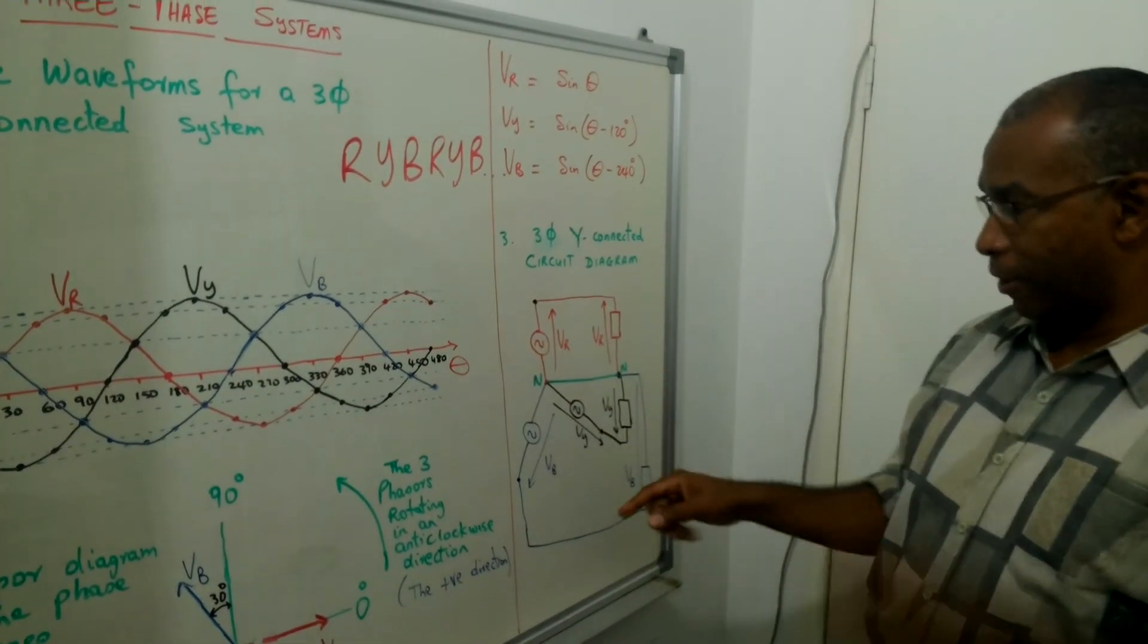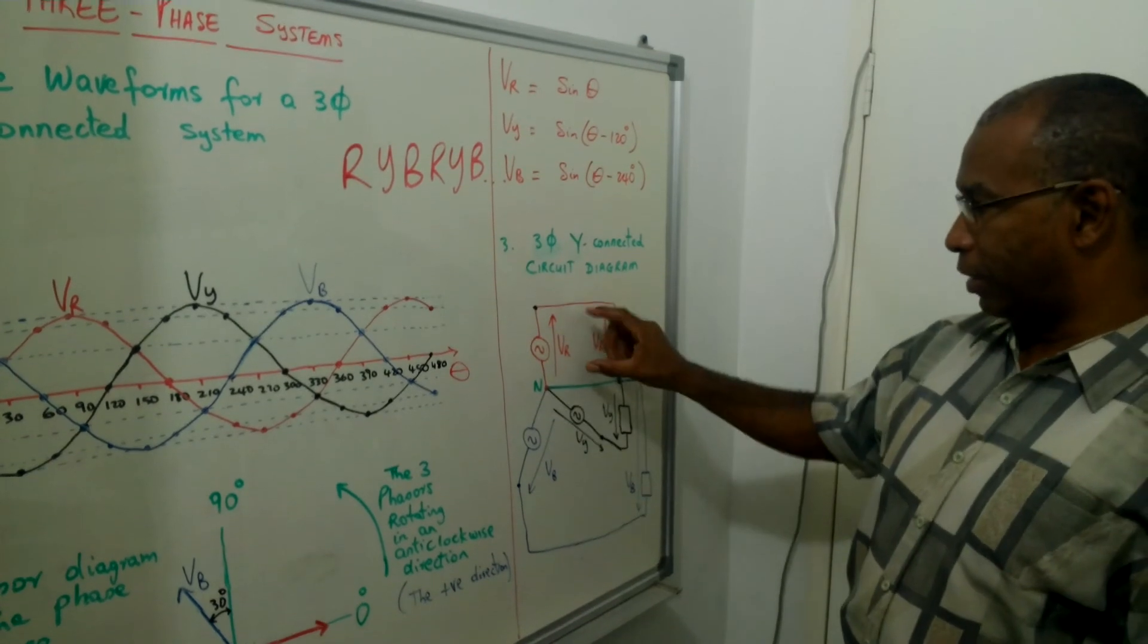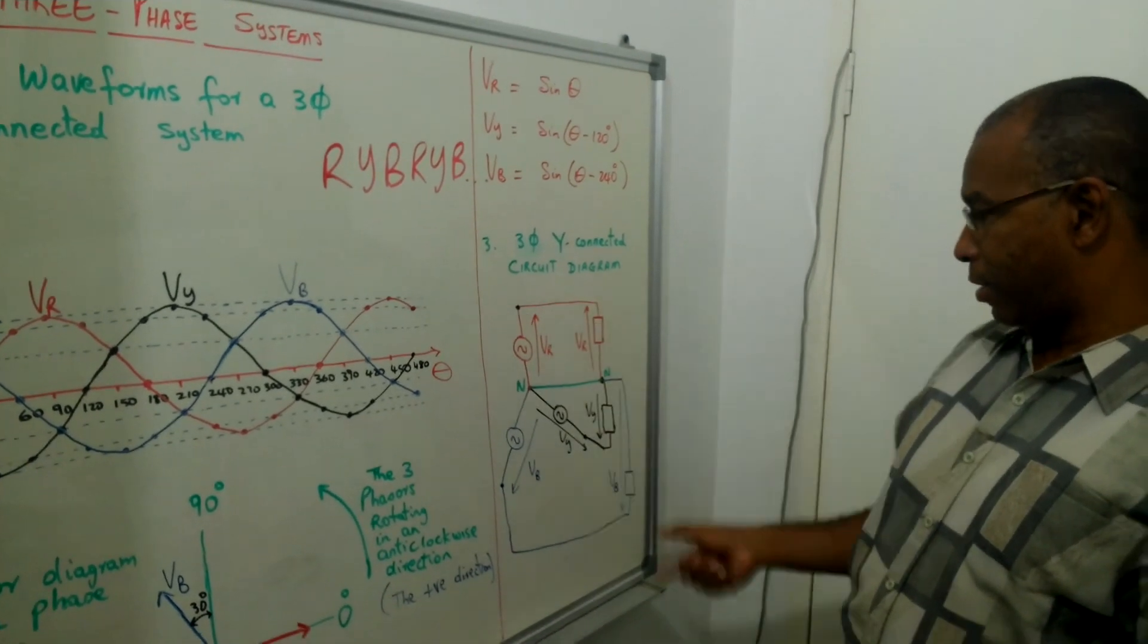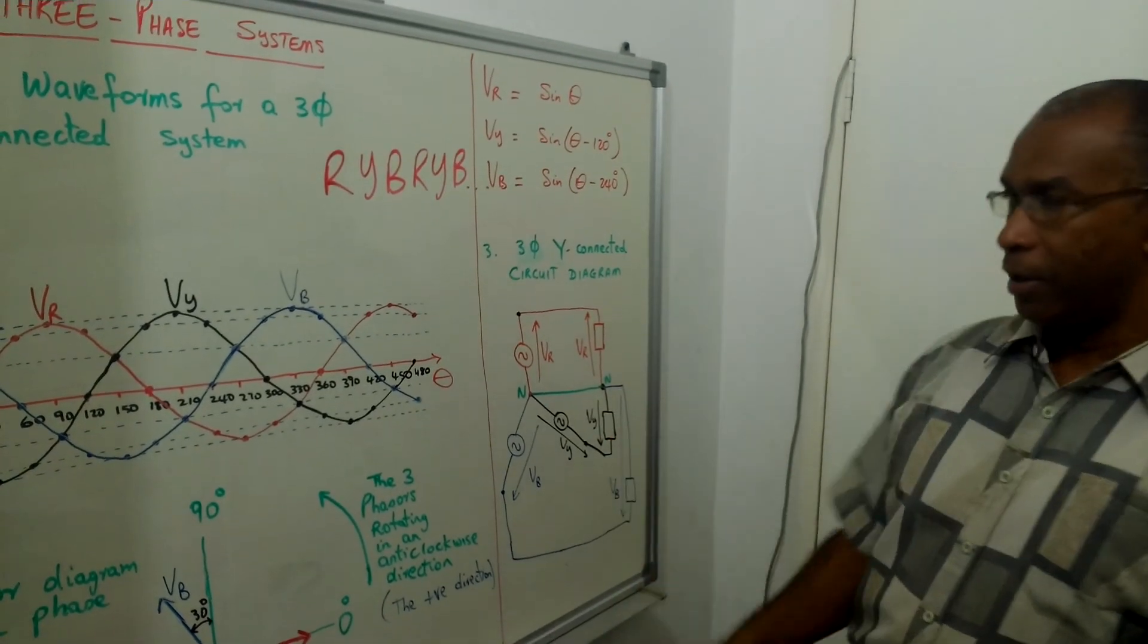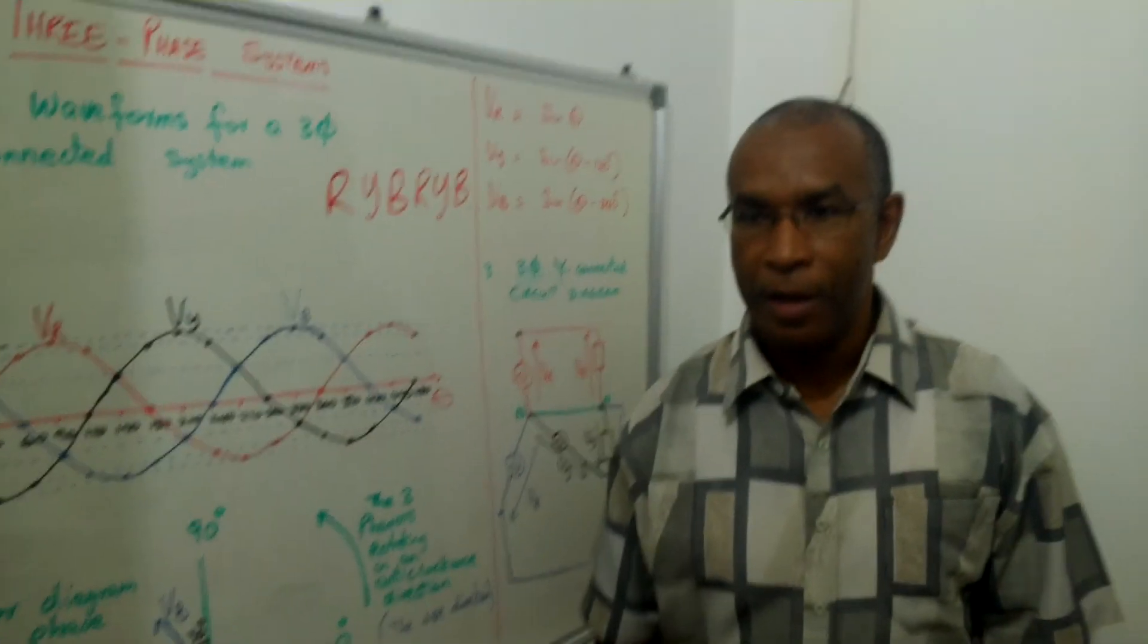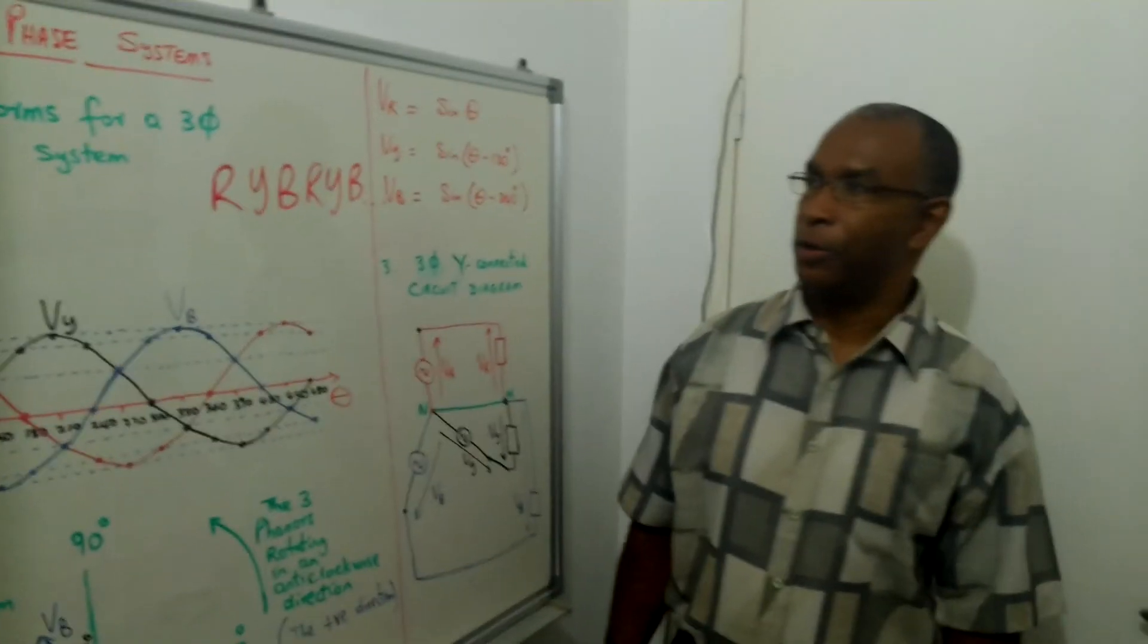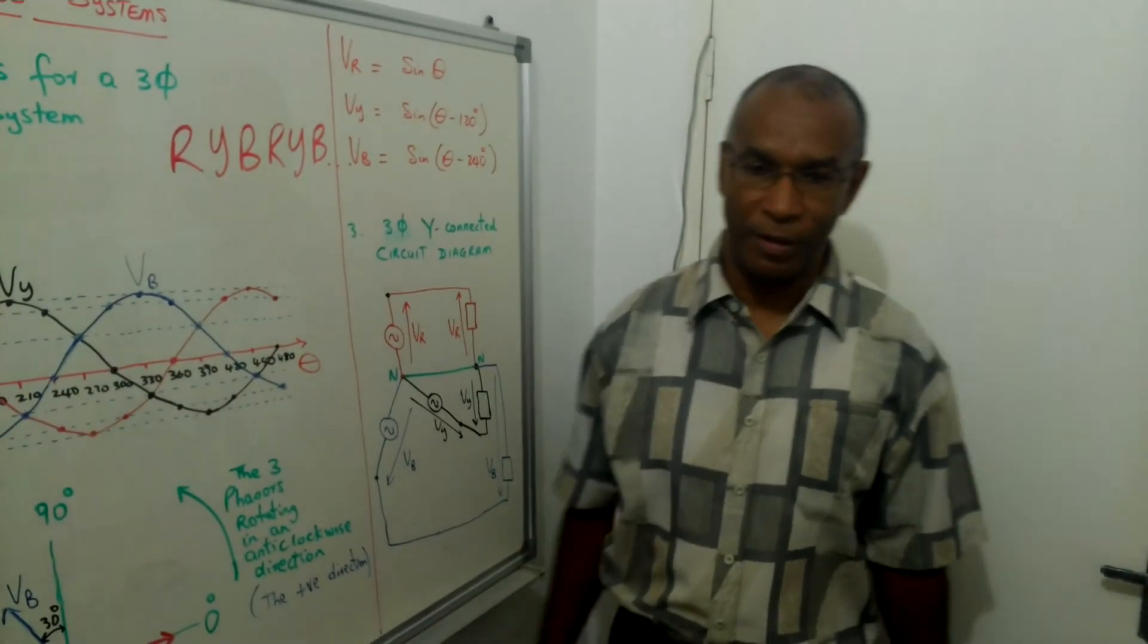This is a star connected circuit diagram because our voltages in the star circuit now are VR, VY, and VB. Just as we have here in the diagram. So that's your quick introduction to the voltage waveforms of a three-phase system.